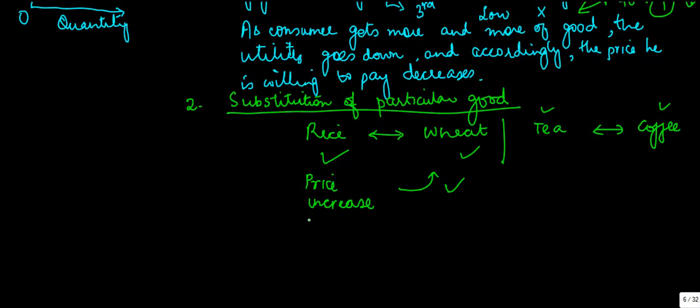So therefore, as the price increased, the demand for rice went down and demand for wheat increased. So in case of substitution of particular goods, what happened is that if there are substitutes which are available in the market for a particular commodity,